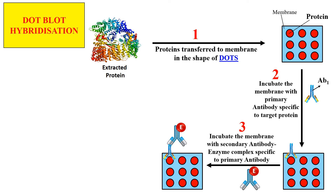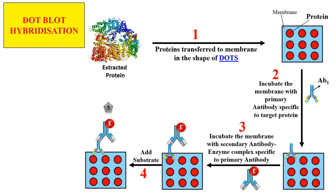Now we use a specific substrate that is specific for this enzyme. As the substrate is added, the enzyme converts this substrate into a colored product. By the identification of color, we can identify or detect a specific protein, and we can also quantify the specific protein by measuring the amount of color formed. This is dot blot hybridization because the sample is loaded in the form of dots and hybridization refers to using antibodies to hybridize with target proteins.